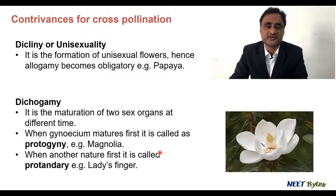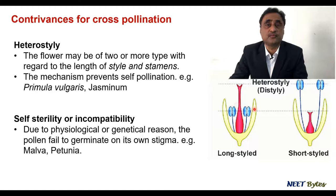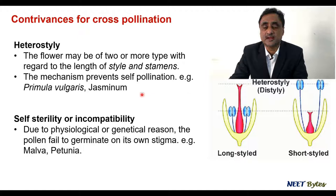When the female matures first, it is observed in magnolia and the event is called protogyny. Similarly, if the male matures first, that condition is called protandry, and the typical example of protandry is lady's finger. Now let's talk about another contrivance — heterostyly. As you can see in the diagram, the style length is different in different plants. There are two different varieties within the same species: one has a longer style and another has a shorter style, and this system also ensures cross-pollination. The typical example is Primula vulgaris.